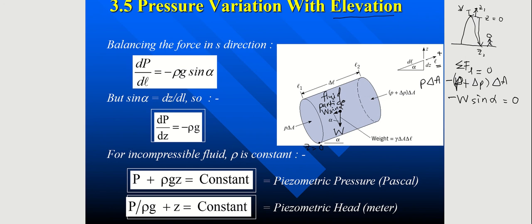So P delta A minus (P plus delta P) delta A minus weight sin alpha equals to 0. So P and P can be cancelled. So what you get here is negative delta P delta A minus weight sin alpha.